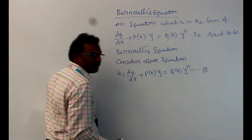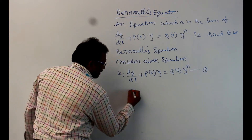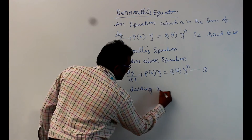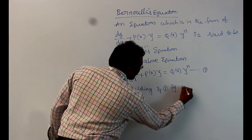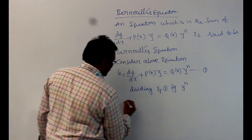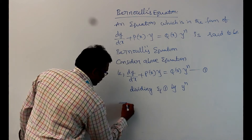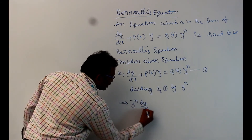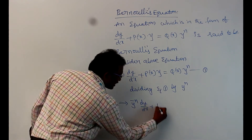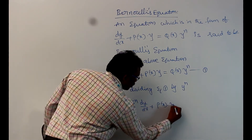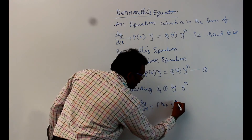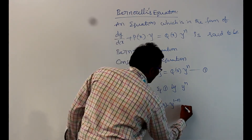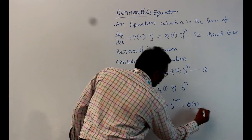Dividing equation 1 by y^n, it becomes y^(−n)·(dy/dx) + P(x)·y^(1−n) = Q(x).